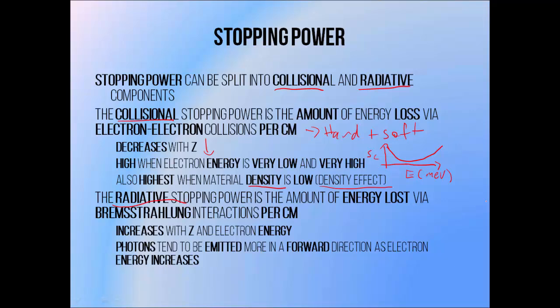The radiative stopping power is the amount of energy lost only via Bremsstrahlung interactions — so the amount of energy that's radiated as photon energy per centimetre travelled by the beam through a medium. It increases with the material atomic number and with the energy of the electron beam, since the Bremsstrahlung interaction is more likely under these conditions. An interesting fact about the Bremsstrahlung interaction is that when low energy electron beams undergo it, they tend to produce photons traveling perpendicular to the electron beam's direction, whereas higher energy electron beams tend to produce photons more often in the forward direction.